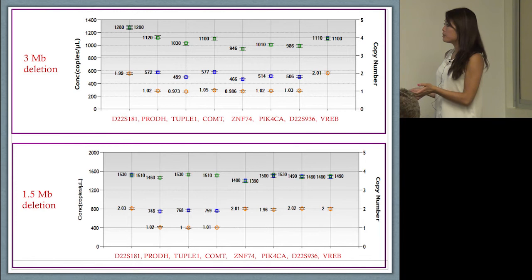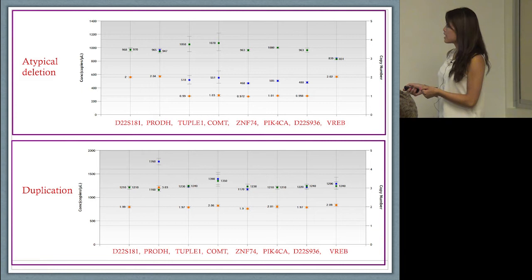It's really easy to find an individual that had the smaller 1.5 megabase deletion.